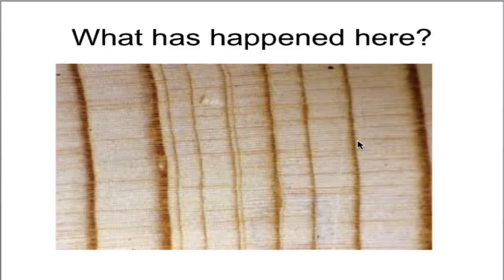Has the climate changed for this tree? What does this mean about the conditions it grew in? Has it gotten colder, drier, wetter, warmer — a longer or shorter growing season? You should kind of see that we have thicker rings here and very thin rings here. So climate has definitely changed for this tree. But can we exactly say if it got cooler, drier, warmer, wetter, or a longer season? We can't know that without actually knowing the tree species.